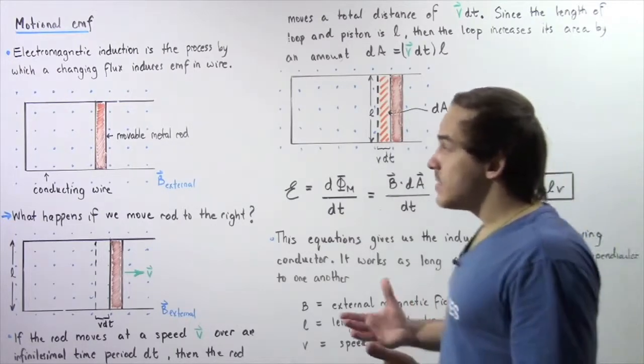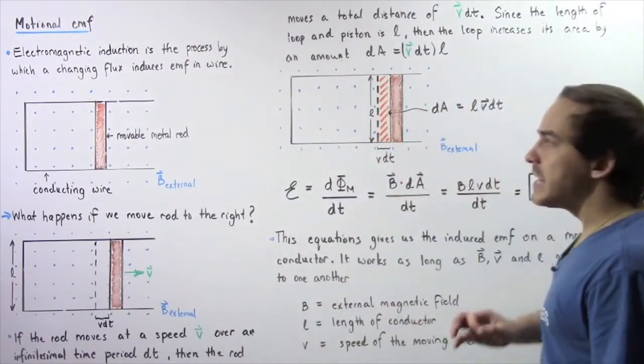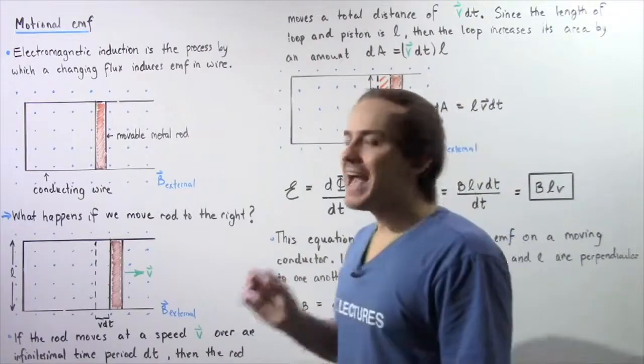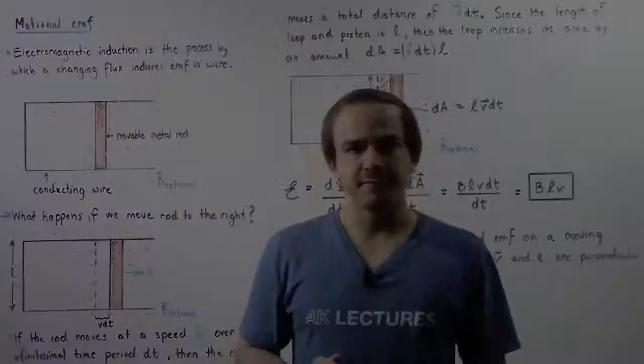We see that if a conductor is moving within a magnetic field, there will be a change in flux, and that will produce an EMF. This EMF is known as Motional EMF.